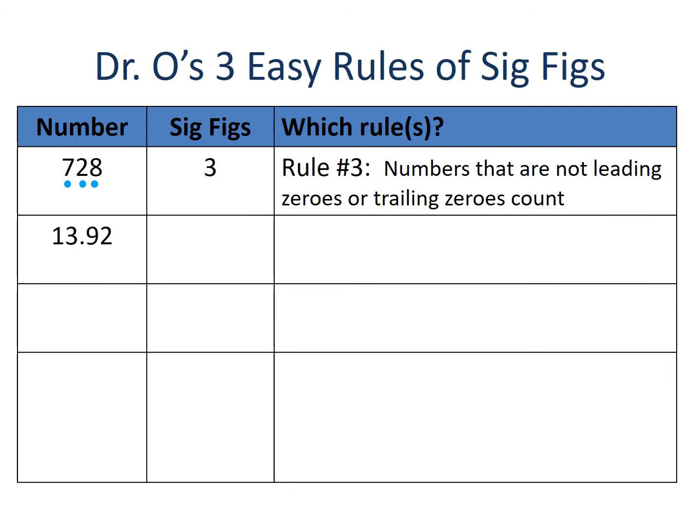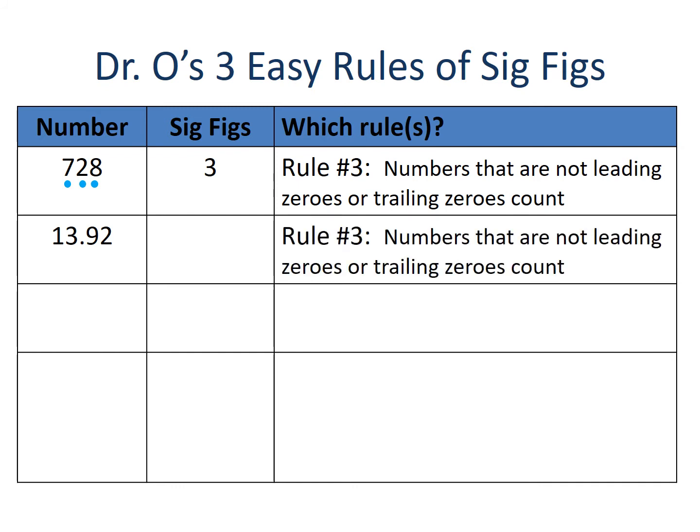In this example we have 13.92, and we have a decimal. Rule number two concerns decimals and trailing zeros, but there are no zeros in this number at all. So neither rule one nor rule two applies, which leaves us with rule number three. All four of these numbers are important to us, and 13.92 has four significant figures.